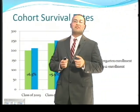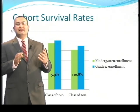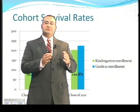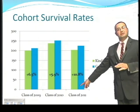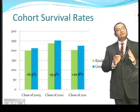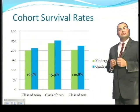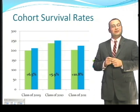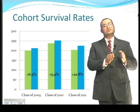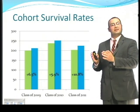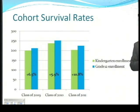This next slide indicates cohort survival rates. We looked at the graduating classes of 2011, 2010, and 2009, and compared class size as graduating seniors to that same cohort as kindergarteners. In 2010-2011, our current graduating seniors showed a 10.8% increase in enrollment from kindergarten to senior year. In the 2010 school year, there was a 5.9% increase, and there was a 6.5% increase in the class of 2009.